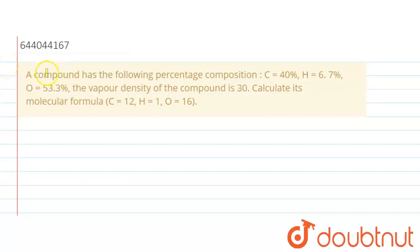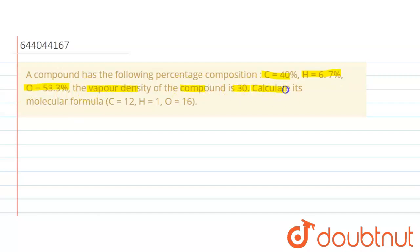The question says that a compound has the following percentage composition: carbon is 40%, hydrogen is 6.7%, oxygen is 53.3%, and the vapor density of the compound is given as 30. We have to calculate its molecular formula, given the molecular formula for carbon, hydrogen, and oxygen.